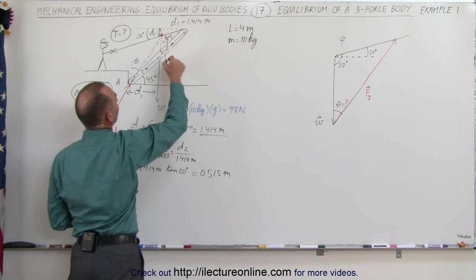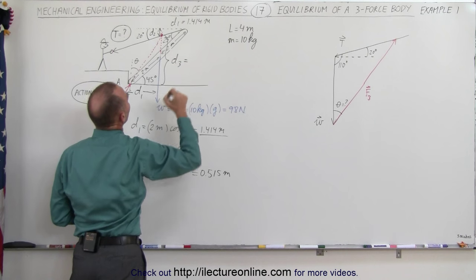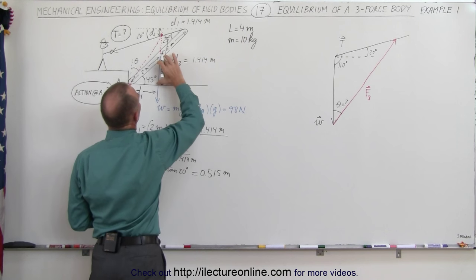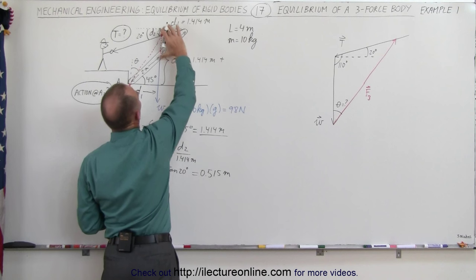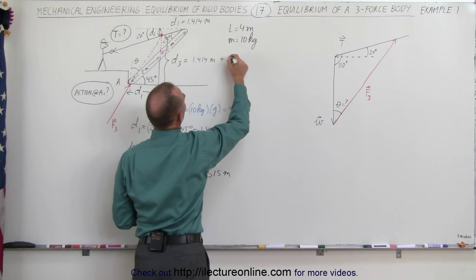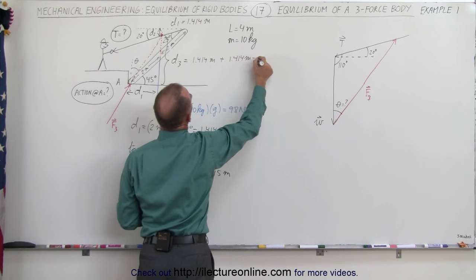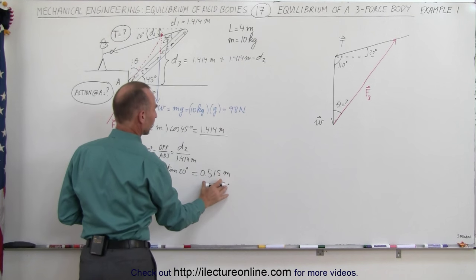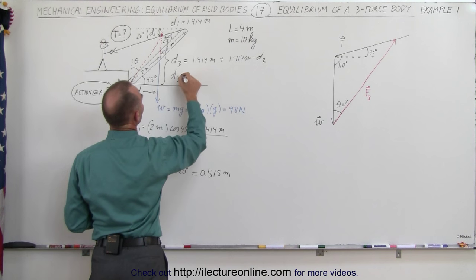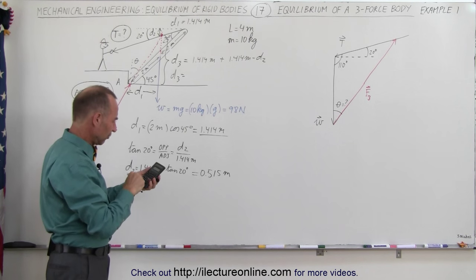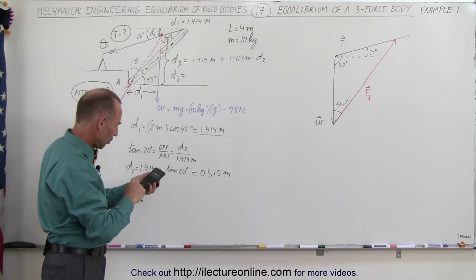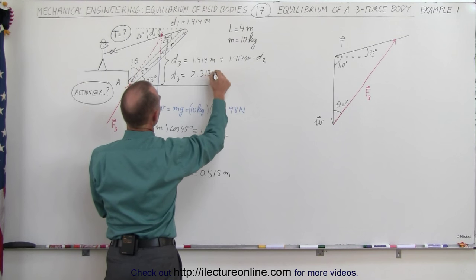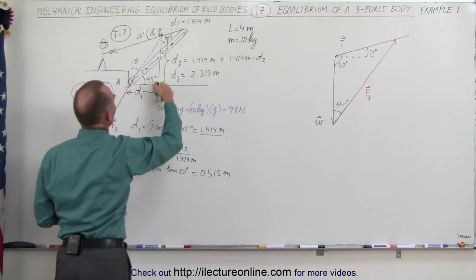Distance 3 is equal to 1.414 meters plus another 1.414 meters, minus distance 2. Since distance 2 is 0.515 meters, distance 3 equals 1.414 times 2 minus 0.515, which equals 2.313 meters. Now I have distance 3 and this triangle.